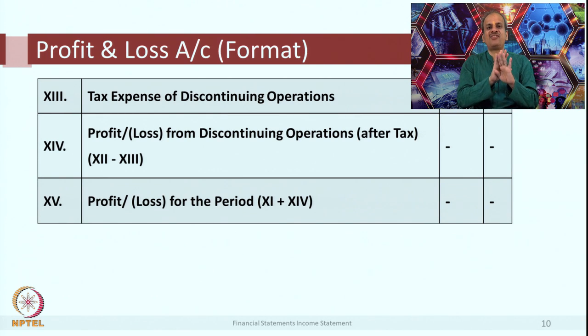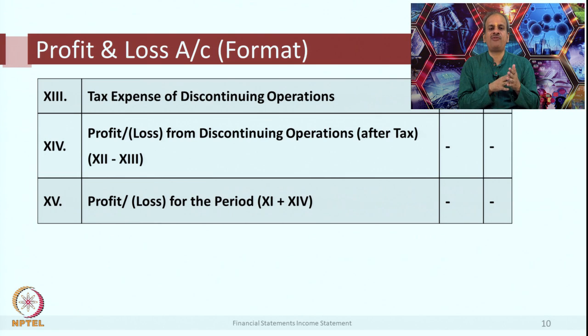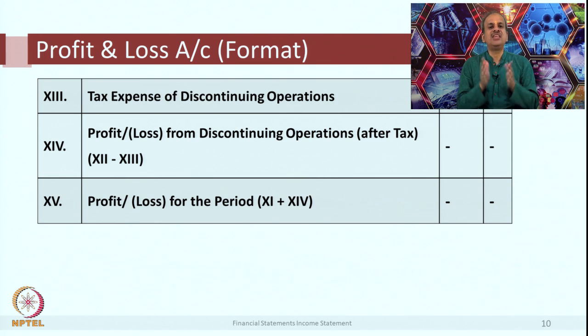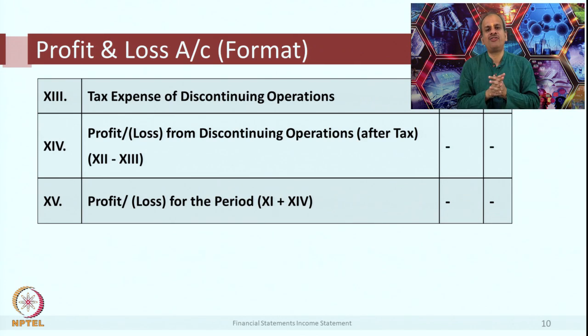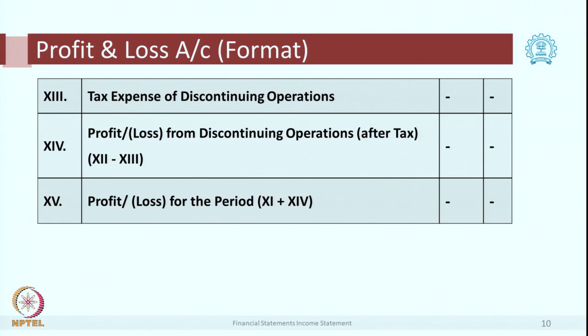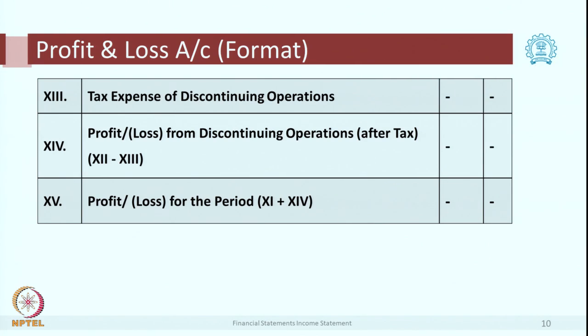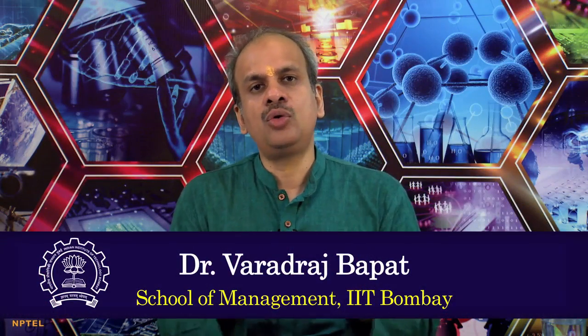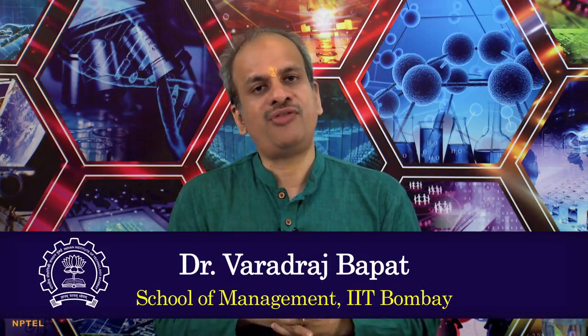Item number 15 is profit or loss for the year — the total of item 11, profit or loss from continuing operations, plus item 14 from discontinuing operations. Continuing plus discontinuing profits after taxes are added to get the final result, like a final scorecard for that business. This was the format as per Schedule 3 of the Companies Act. We will stop here and in the next session we will continue with the profit and loss account. Namaste, Dhanyavad.